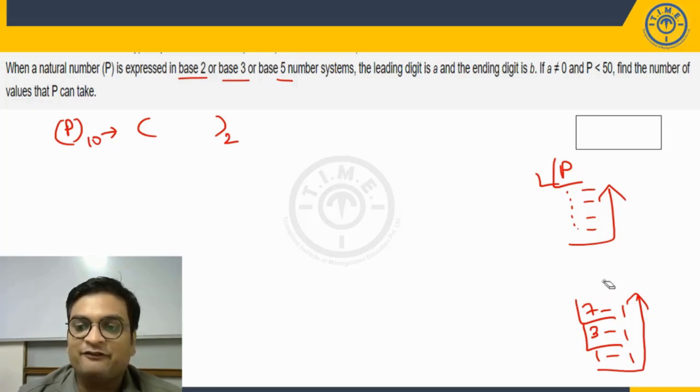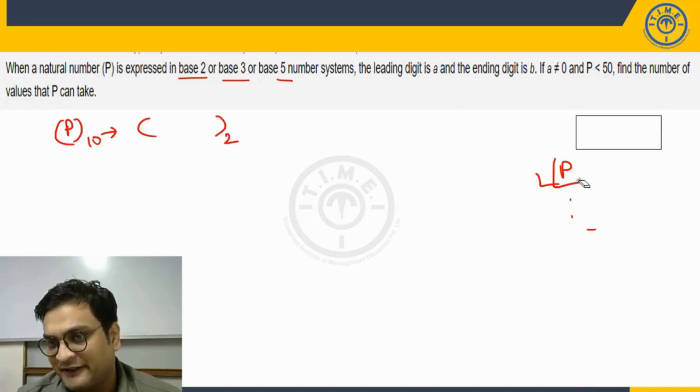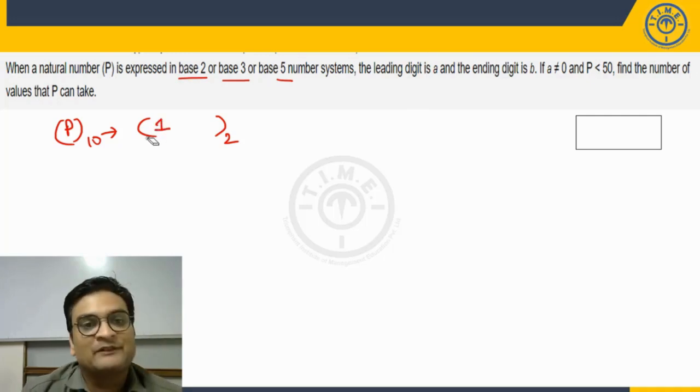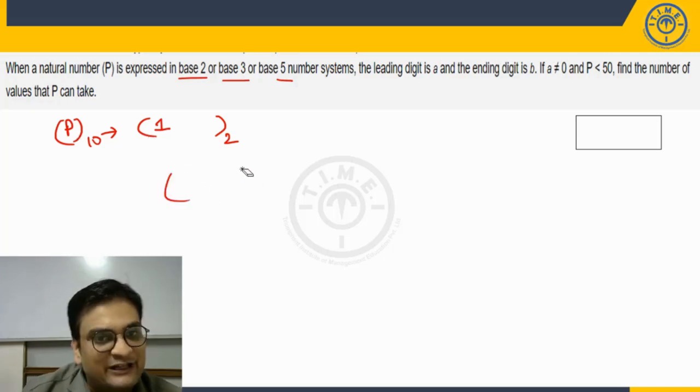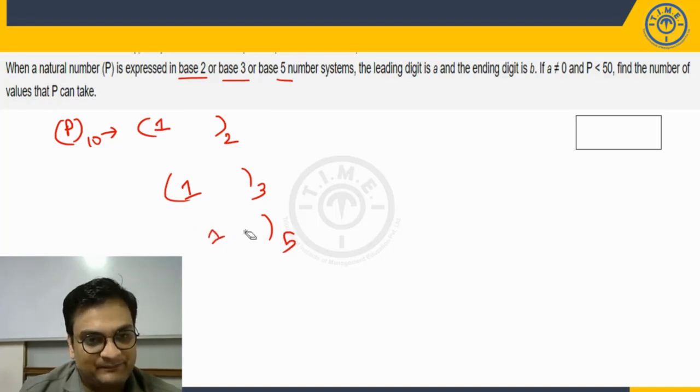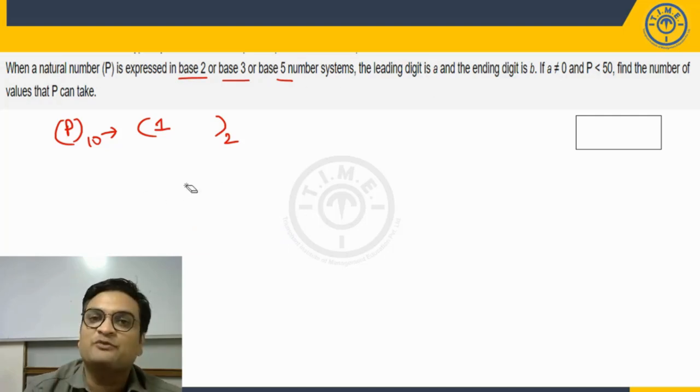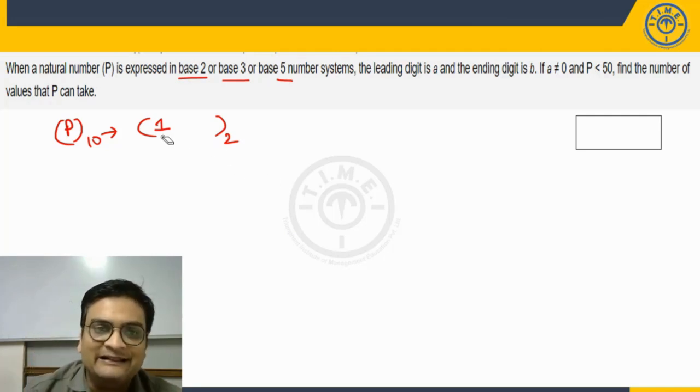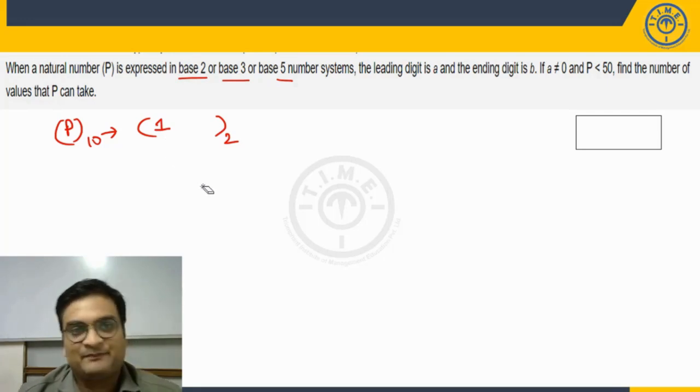Also, in case of binary, the digits that we make use of for writing any number are only 0s and 1s. Now, if he says the leading digit is A, the leading digit cannot be 0 anyways, so it will have to be 1. That means the value of P should be such that when you convert P into base 3 also, the leading digit should be 1, and when you convert into base 5 also, the leading digit should be 1. Are we getting this point? Because the leading digit is the same for all three bases, and we started with base 2 because binary is most convenient with only two possible digits, 0 and 1. Leading digit cannot be 0, thus it has to be 1.